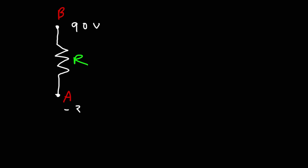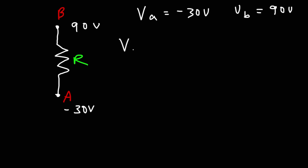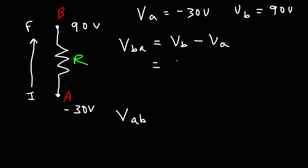Let's use another example. Let's say point B is at 90 volts and point A is at negative 30 volts. To calculate V_BA, it's the final value V_B minus the initial value V_A — we're going from A to B. So that's 90 minus negative 30, which equals positive 120. V_BA is positive 120.